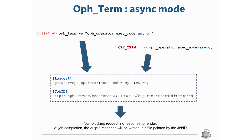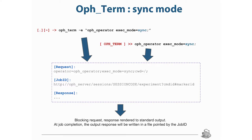In both cases, we have the output of the request with the job ID of your execution. This is a non-blocking request, and no response will be rendered. In synchronous mode, with ExecMod set to sync, you have not only your request and your job ID, but also the response. This is a blocking request — the response is rendered to standard output.